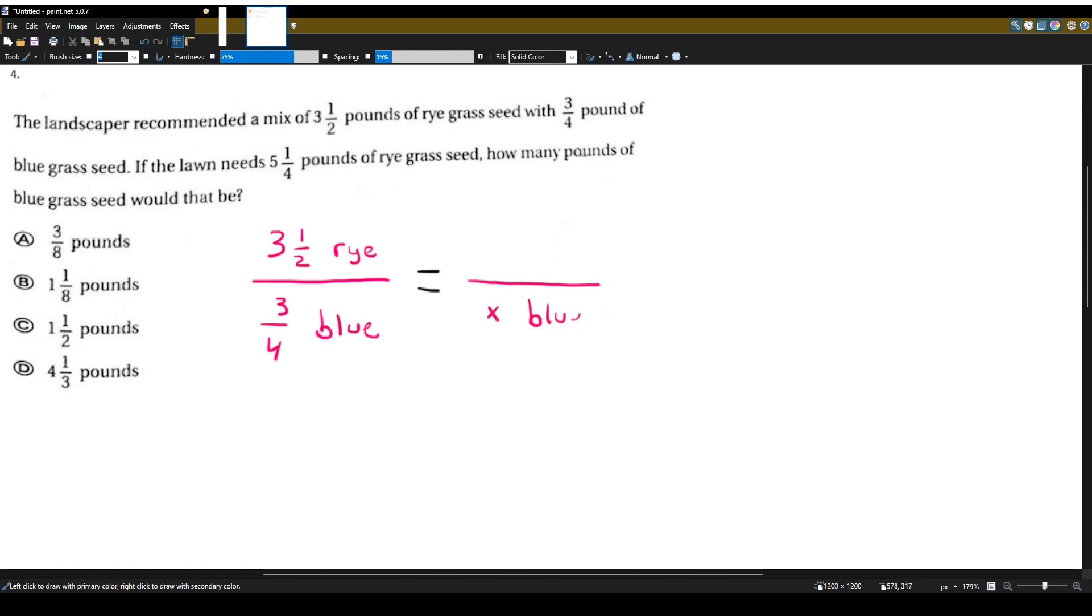How many pounds of bluegrass seed do we need if we have five and one-fourth pounds of rye? So that's the proportion. Rye to blue equals rye to blue. And we have all the numbers we need except for how much bluegrass seed we need because that's the question that it's asking.